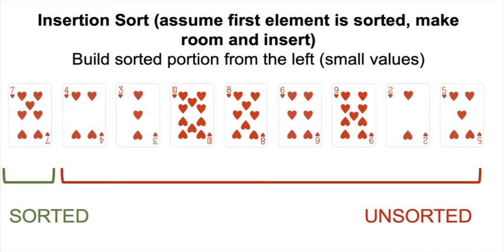I've got nine cards here — two all the way through ten of hearts — shuffled into a random order. Let's pretend that you're playing a card game and you were just dealt these nine cards and you're going for a straight. So you want to sort your hand of cards that were dealt to you in this order to two through ten.